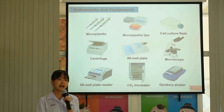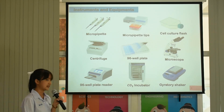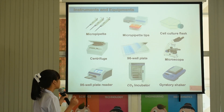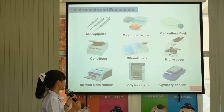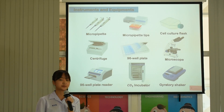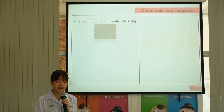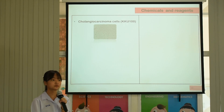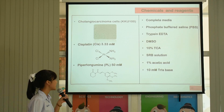For this study, I used several instruments and equipment, including cell culture plates, 96-well plates, a microplate reader, microscope, and other items. In this study, I used one human CCA cell line as a model. Here is the list of chemicals and reagents.